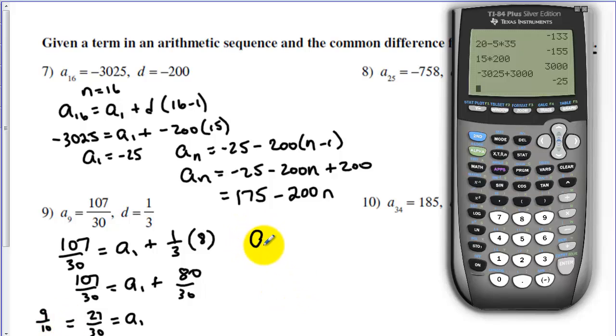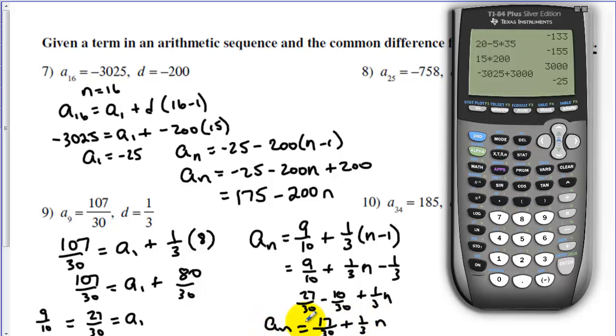Now we can write our explicit formula and distribute the 1 third. We need to combine like terms here. So we need to get it back to 30. That's going to be 27 thirtieths and this will be minus 10 thirtieths. So that gives us 17 thirtieths plus 1 third n. And that is our explicit formula.